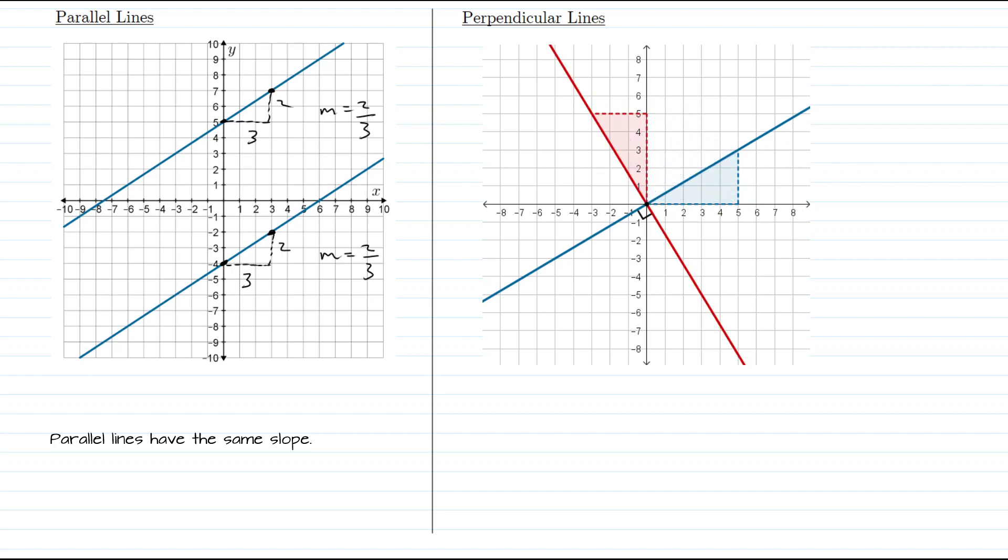Now that doesn't happen just for these lines here, that will happen for any line. So if I draw perhaps a line that has a negative slope here, that has a slope of negative two-thirds, perpendicular line? No problem. Rotate that 90 degrees.